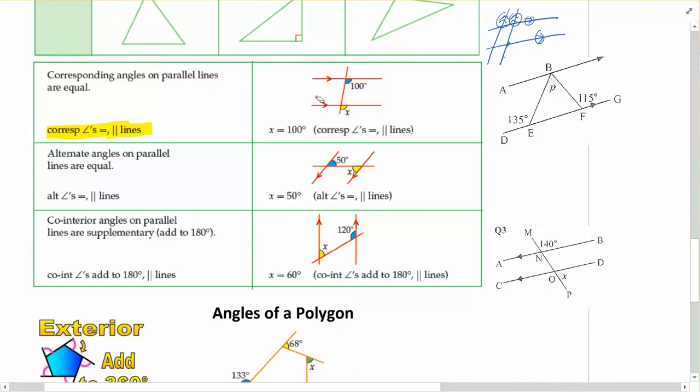So our rules here are for corresponding angles on parallel lines are equal. So corresponding, if you think about what that word means, it means kind of the same. So same location, same situation. And for parallel lines, sometimes I think about chopping it in half. You're going to chop that diagram in half. This whole piece here should look very similar to this whole piece here. And if you pick it up and put it on top of the other, you'll get 100 degrees right where the x is because they're corresponding.